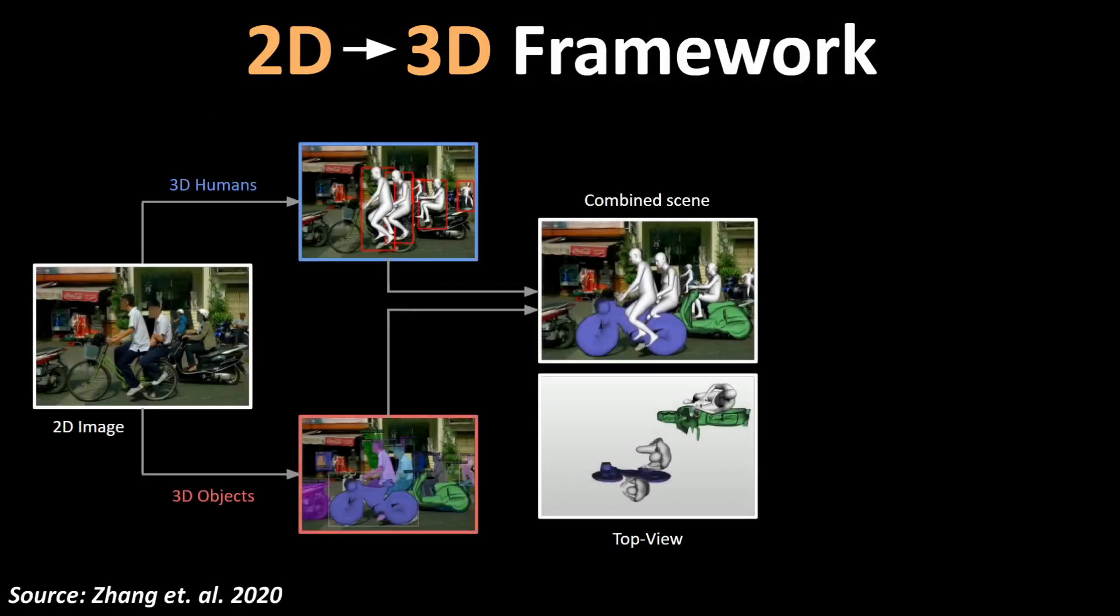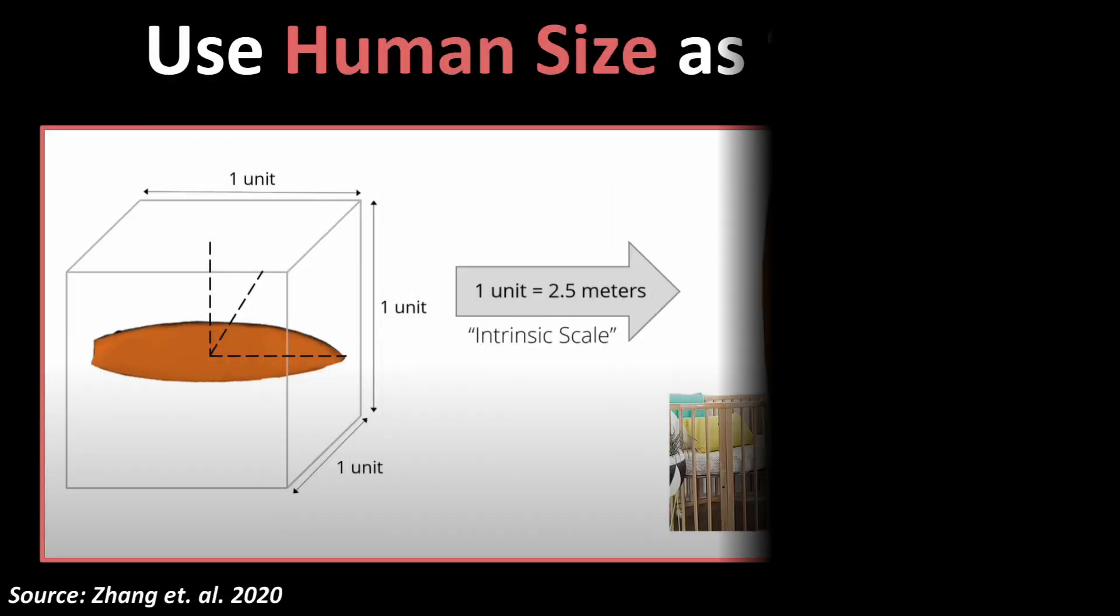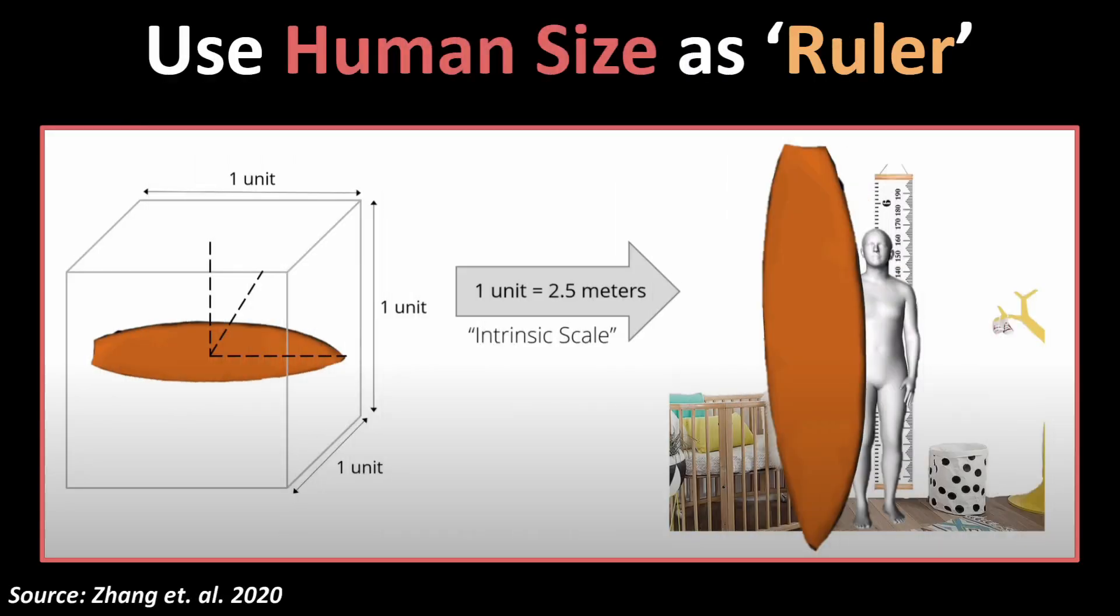...their method, abbreviated FOSA, is able to infer the correct spatial arrangement of the humans and the objects by learning about how humans interact with such objects in general. This means the model has been trained to learn about the relative sizes of different everyday objects with respect to the size of humans.